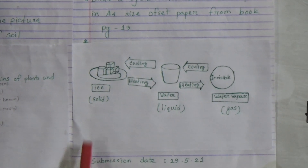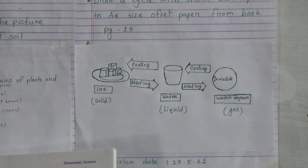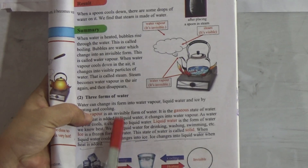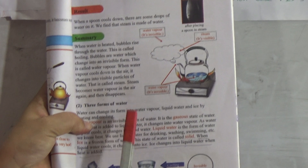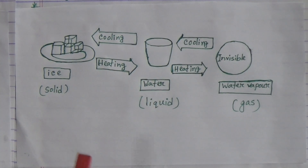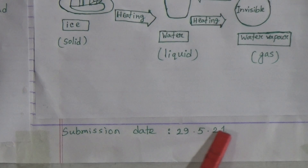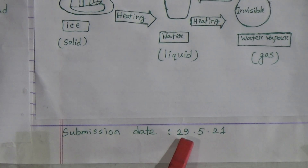First, write the topic name, then draw the figure, then write the short description from page 19. You must also color the figure. Your submission date will be 29 May 2021.